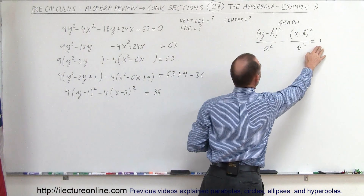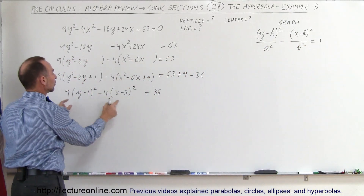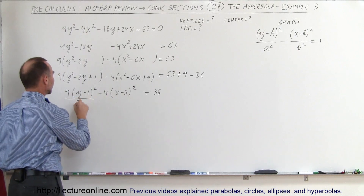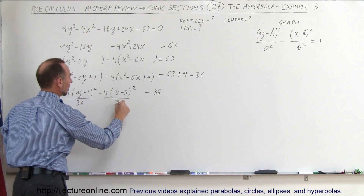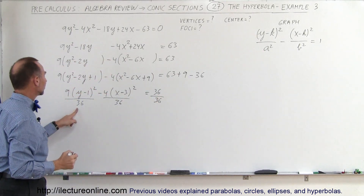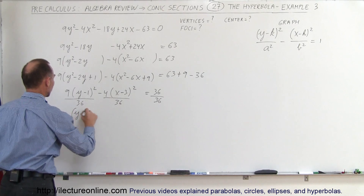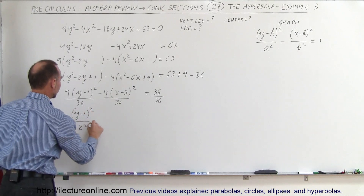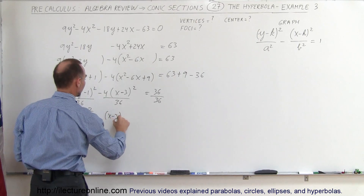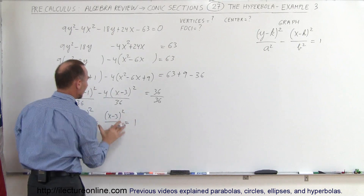We want a 1 on the right side with no leading coefficients, so we divide both sides by 36. On the left, 9 divided by 36 gives us one-fourth, so we get (y minus 1) squared over 4, which is 2 squared, minus (x minus 3) squared over 9, which is 3 squared, equals 1.